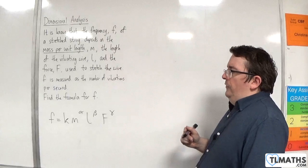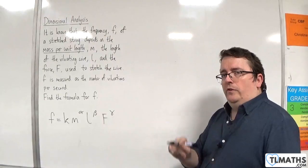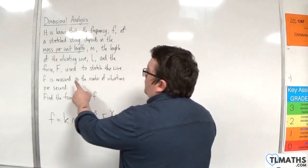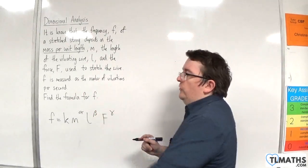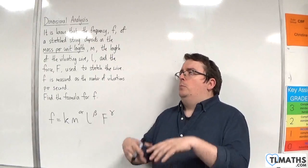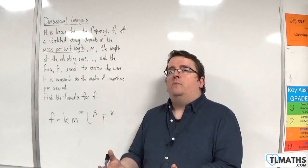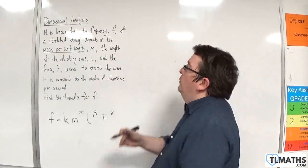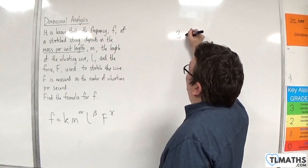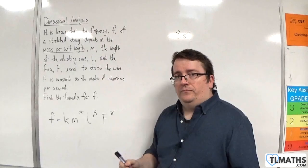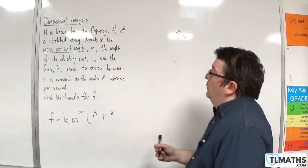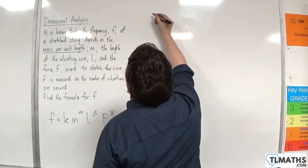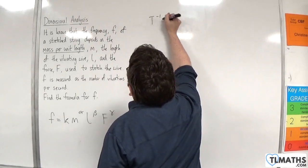So now we need to look at the dimensions of either side of this. Now f is measured as the number of vibrations per second. So it would be like saying I've got three vibrations per second, so three per second. The way you would write that is 3s to the minus one. So the units here would just be t to the minus one. That's all it would be. So the left-hand side is t to the minus one.